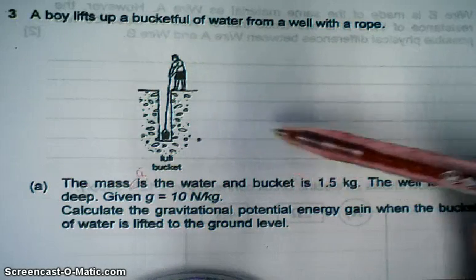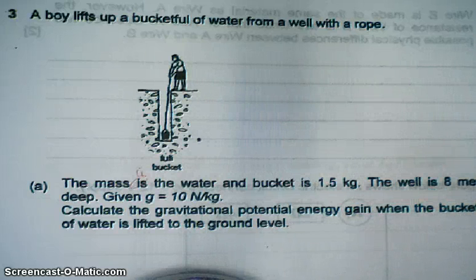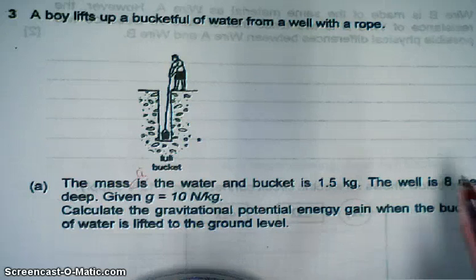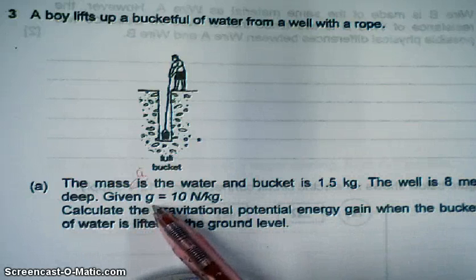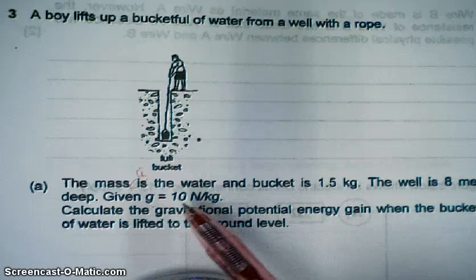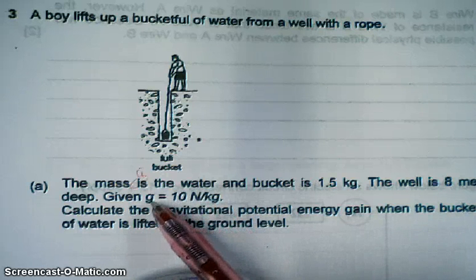The mass of the water and the bucket is 1.5 kilograms. The well is 8 meters deep. Given that g is 10 Newton per kilogram. G is the gravity.